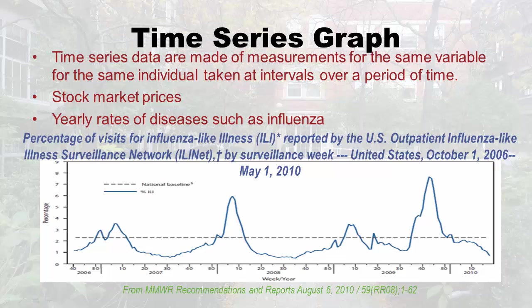Let's pretend there are like 10 clinics. Each week, these clinics have to report — for example, 100 visits this week, and 10 of them were for influenza-like illness, so that would be 10% that week for that clinic. They got all the clinics together and found out what the percents were. On the y-axis you see the percentage, and on the x-axis, all the weeks of the year.